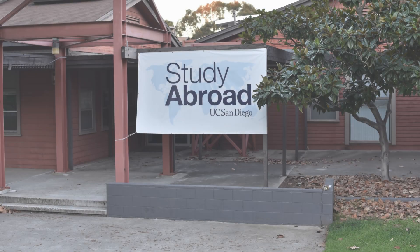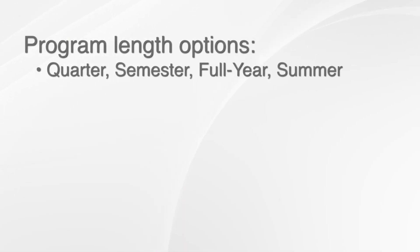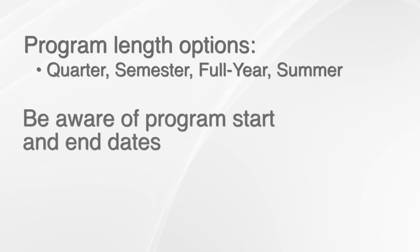In order to review all available abroad opportunities, we recommend that you meet with an advisor at the study abroad office to determine which country, institution, and length of time abroad is preferred. Program length options can be quarter, semester, full year, and summer. It is important to be aware of the program's start and end dates in order to determine which quarters you will be away from UC San Diego.